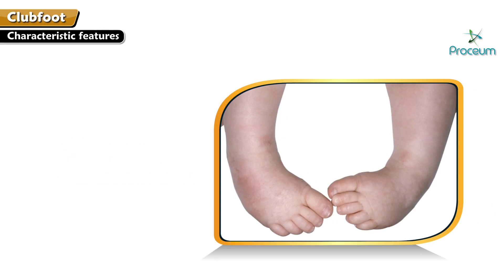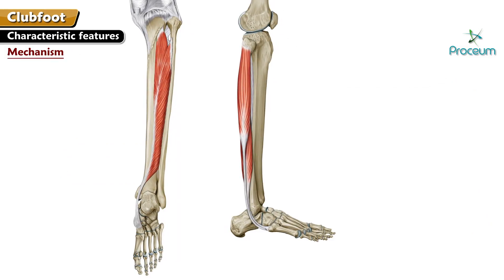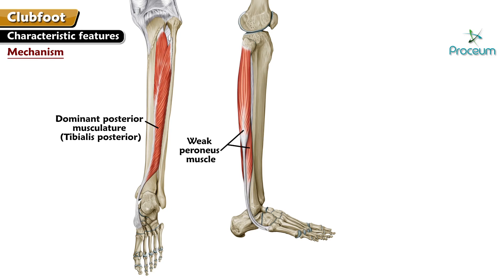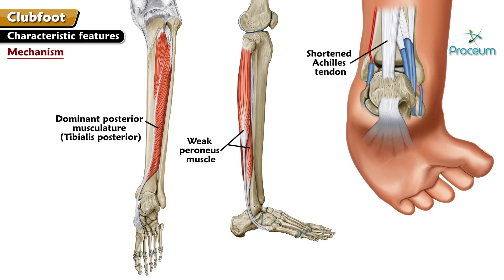Characteristic features: it is bilateral in 30–50% of cases. Mechanism: a dominant posterior musculature, especially tibialis posterior, with weak peroneus muscles and a shortened Achilles tendon can all contribute towards causation of a clubfoot.